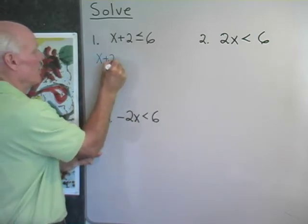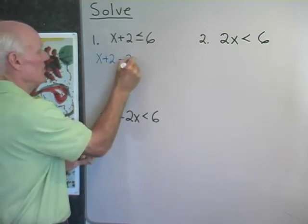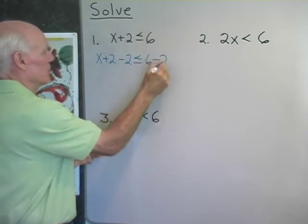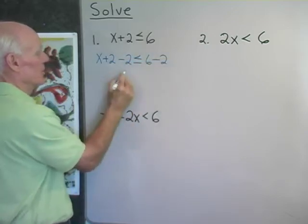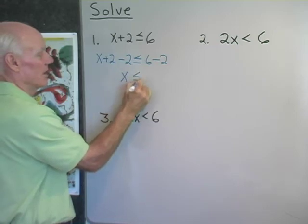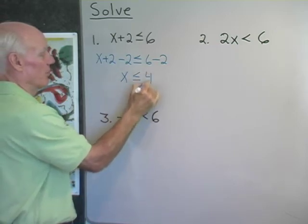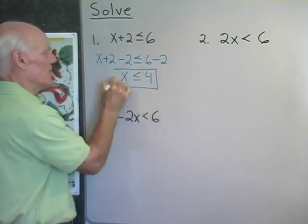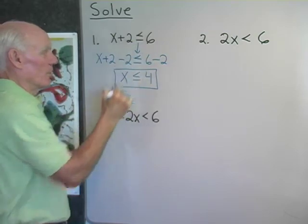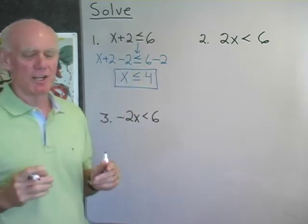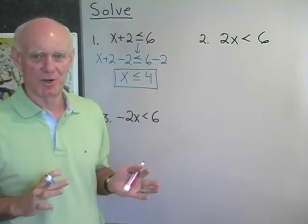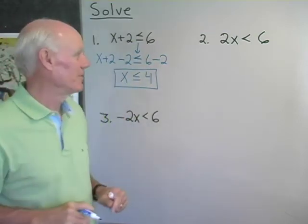x plus 2 minus 2 less than or equal to 6 minus 2. So on this side I have just x plus 0, which is x, less than or equal to 4. You can see with the addition property that whatever direction that inequality symbol pointed in in the first place, it continues to point in that direction.